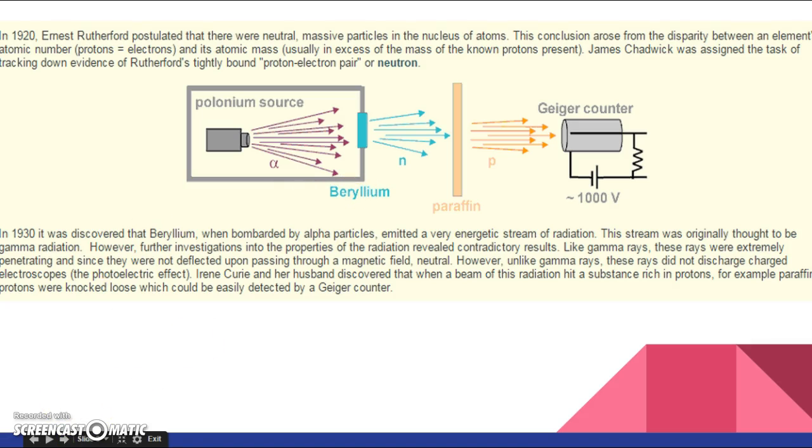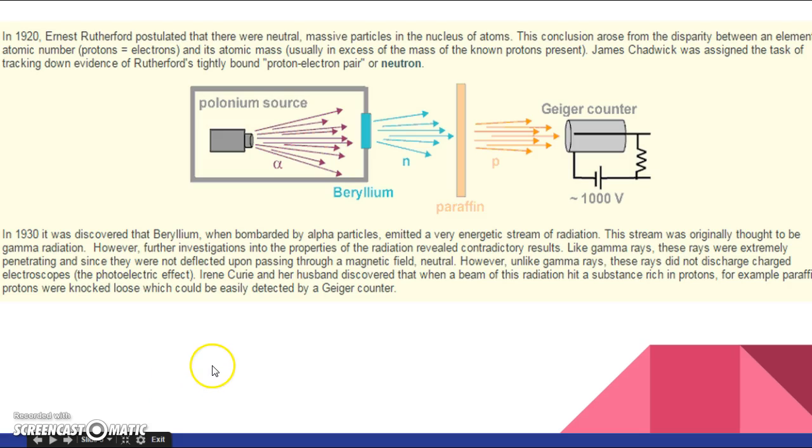You do not need to write any of this down. In 1920, Ernest Rutherford, we talked about him already. Remember what he discovered? He used the gold foil and shot positive alpha particles through it. When they hit the positive nucleus, what happens when two positives come together? They repel each other, so they bounce straight back at him. He figured that out, but he realized that there were definitely some issues with the mass. Because protons weigh how many amu? One. And electrons weigh how many amus? Zero. So Chadwick was assigned with, where do we got all this extra weight from?